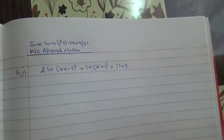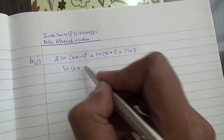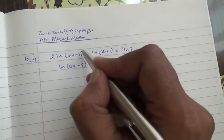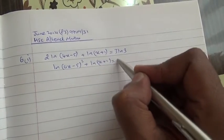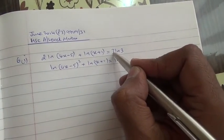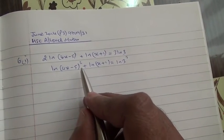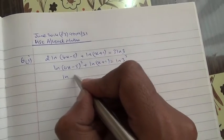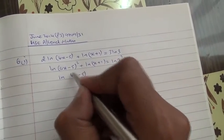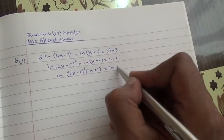For the first part, we'll need to work with logarithms. So this is ln(4x − 5) — the 2 goes on top and becomes the power — plus ln(x + 1) = ln 3, and the 3 goes on top and becomes the power. When you have addition for logarithms, you multiply. Therefore we get ln[(4x − 5)² × (x + 1)] = ln 27.